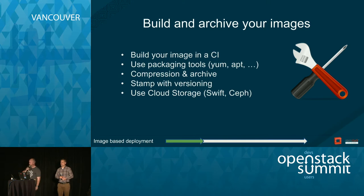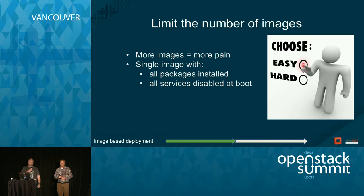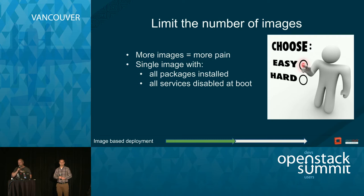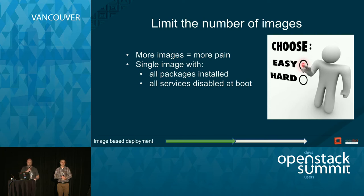Since we're using cloud, we archive images in object storage — Swift or Ceph, for example. Our experience is that we started with many different images, one per role — compute, controller, networking — but this caused an explosion of images. So we moved to just two images: one for the installation server and one for all OpenStack services installed but nothing activated, with configuration management activating services as needed.